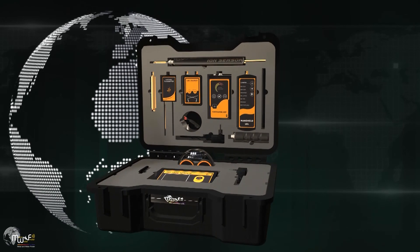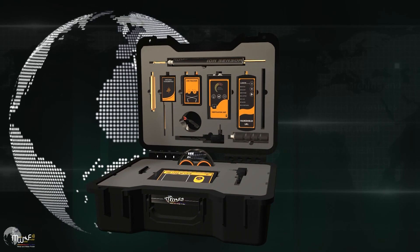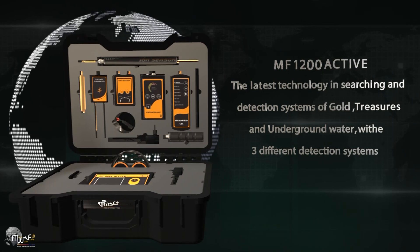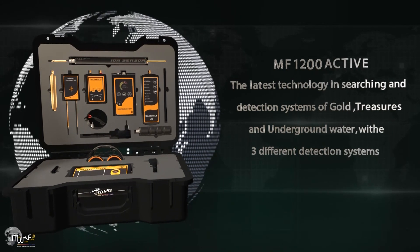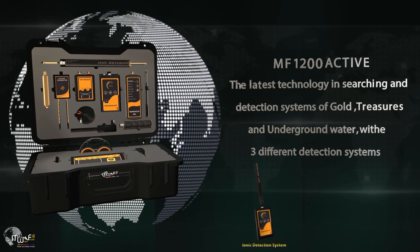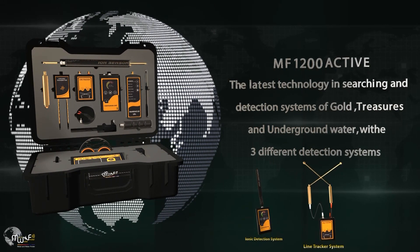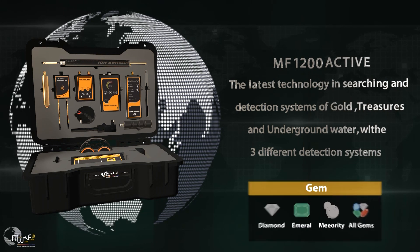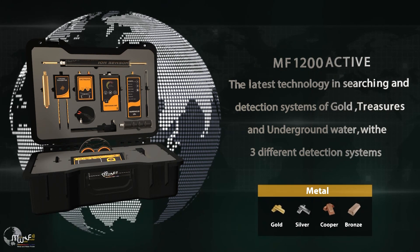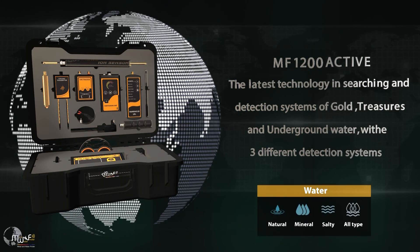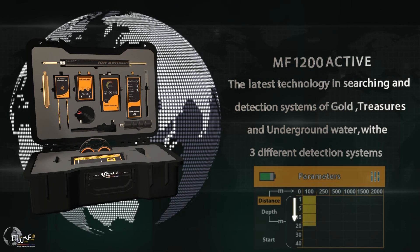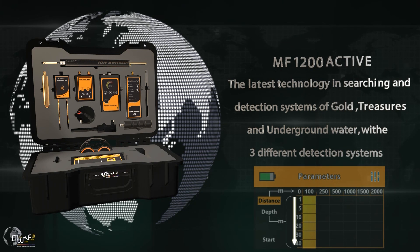The MF1200 active device is equipped with cutting-edge technology for gold, treasure, and groundwater detection. It features three advanced detection and exploration systems for detecting gems, gold, underground water, and voids, reaching depths of up to 40 meters for ground and 450 meters for water.